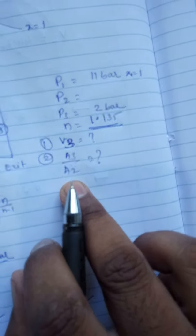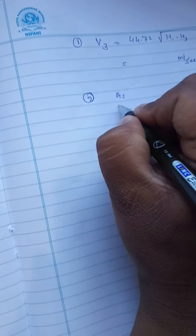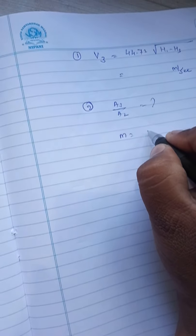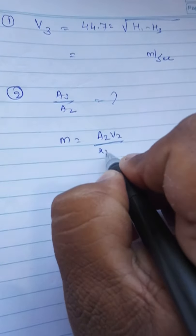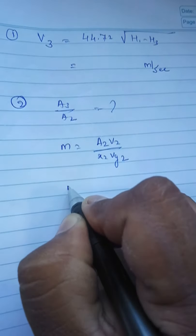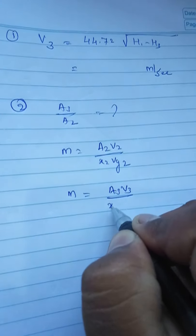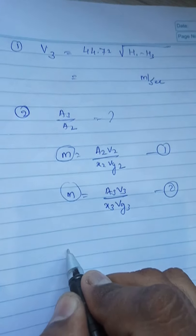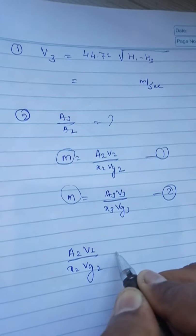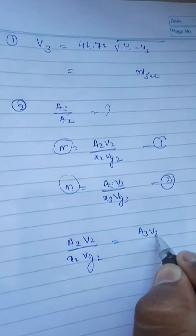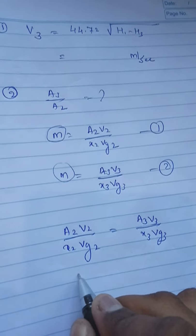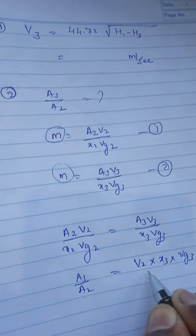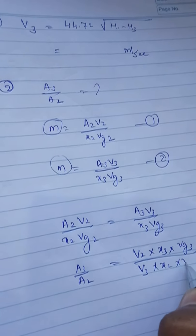Second one, what he has asked: ratio of exit area to throat area means A3 by A2. Now we know that M is equal to, here M is not given but we know the formula M is equal to A2 V2 X2 VZ2, which is equal to A3 V3 X3 VZ3. From this equation, since both side mass of steam is same, I can equate and write like this: A2 V2 divided by X2 VZ2 which is equal to A3 V3 X3 VZ3.